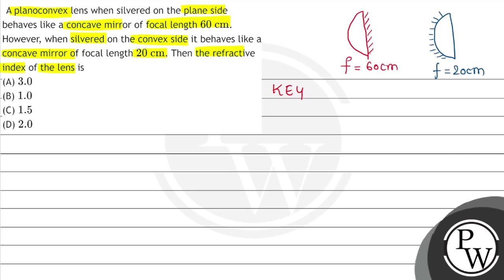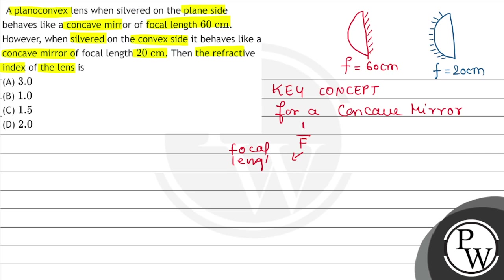The key concept we will use is: for an equivalent concave mirror, 1/F equals 2/f plus 1/fm, where F is the equivalent focal length, f is the focal length of the lens, and fm is the focal length of the mirror.